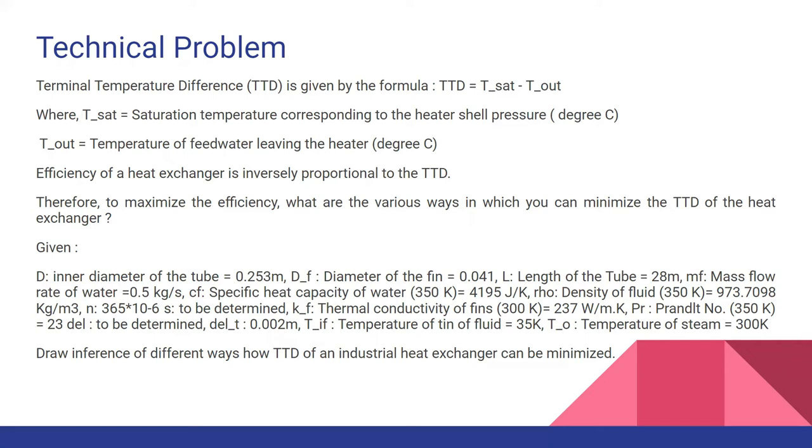What are the various ways in which you can minimize the TTD of the heat exchanger to maximize the efficiency? There's some data given and we also need some of the data that we have assumed that generally is there in a normal heat exchanger. Also, we'll draw a difference of different ways how TTD of an industrial heat exchanger can be minimized. We look into the solution and then we'll come to know about how these things work.